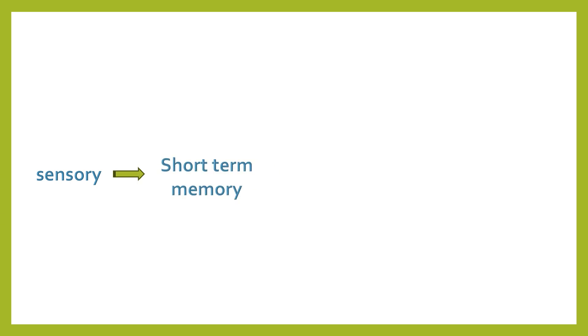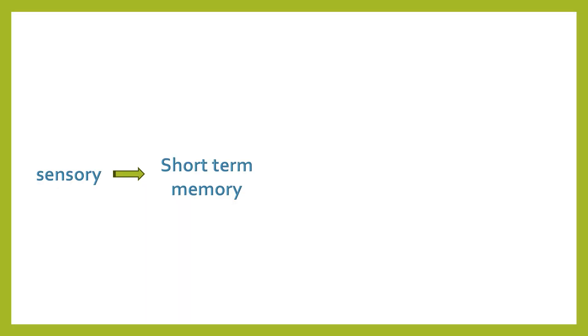Before jumping into the strategy, I need to explain a little about how the human brain works. When you receive information — whether from videos, books, or audio — it's stored as sensory input, then moves to very short-term memory. If you pay enough attention, it becomes short-term memory. For example, if someone tells you their name but you don't pay attention, you forget it immediately. If you do pay attention, it moves to the next step: working memory, where you use that information to answer questions or produce output.